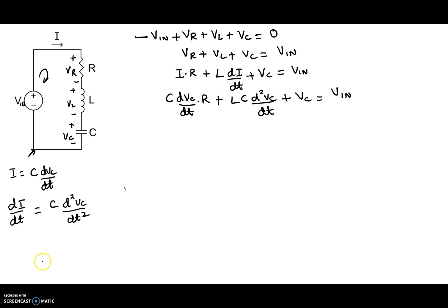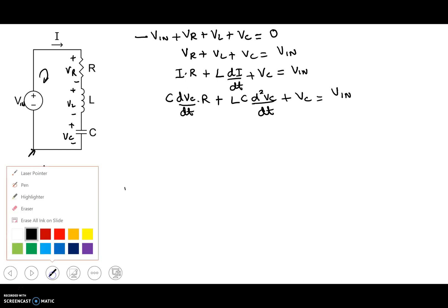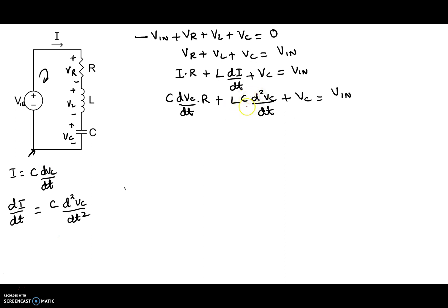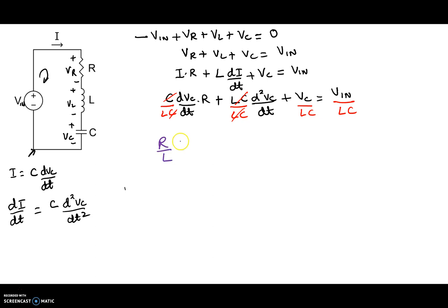It's not quite in standard form yet. In order to put it in standard form, we need the coefficient of the second-order term to equal one. To do that, we'll divide both sides by LC. Using a different ink, dividing by LC throughout: R/L·dVc/dt + d²Vc/dt² + Vc/LC = Vin/LC. Now I've rewritten this second-order differential equation so we have the second-order term first, then the coefficient of the first-order term, then the coefficient of Vc, and the right-hand side.